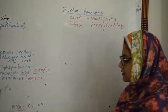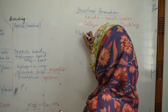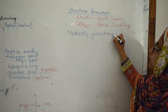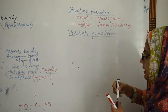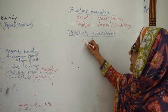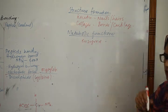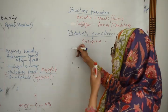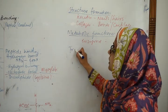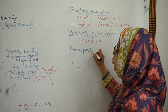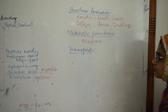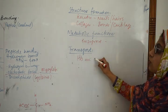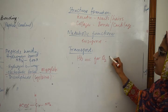The second function is metabolic functions. Enzymes are also proteins and they carry out metabolic functions. The third function is transport — for example, hemoglobin is responsible for oxygen transport.